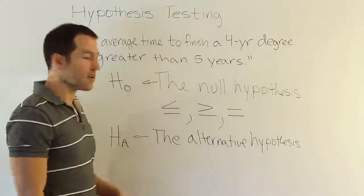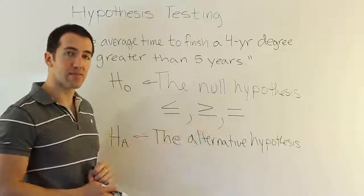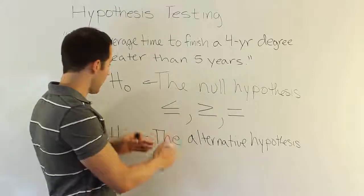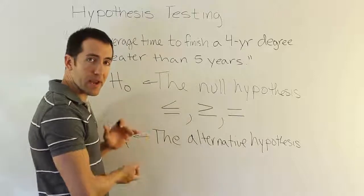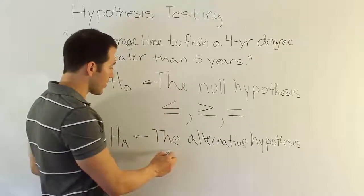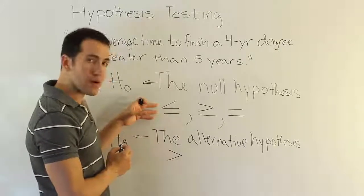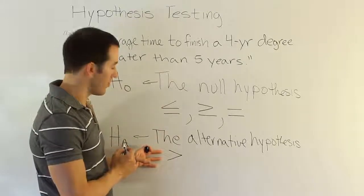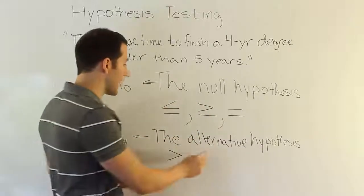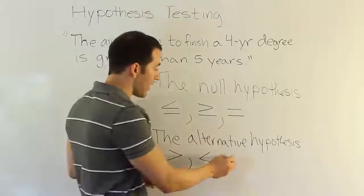I want to talk about its symbols, because the null has its three symbols, the alternative has its three symbols that correspond to these three symbols. What you want to realize is that they come in pairs. H₀ and Hₐ will come as a pair in each problem. If H₀ should have less than or equal to, the alternative hypothesis has to have the opposite of that, greater than. When H₀ has less than or equal to, the alternative will have the greater than symbol. When the null hypothesis has greater than or equal to, the alternative has to have less than. And if the null has equal to, the alternative must have not equal to.